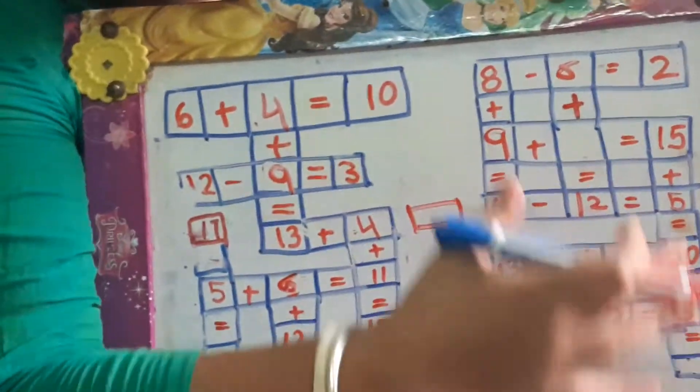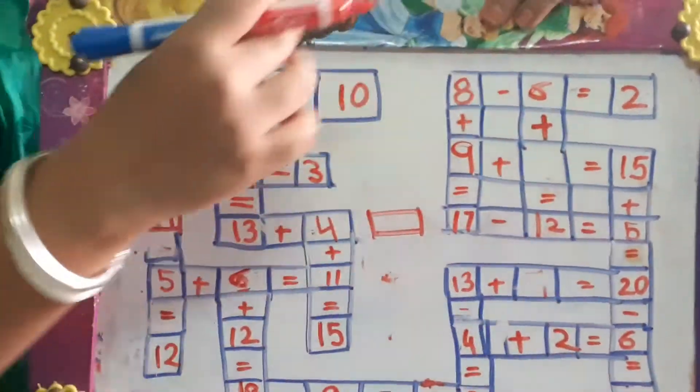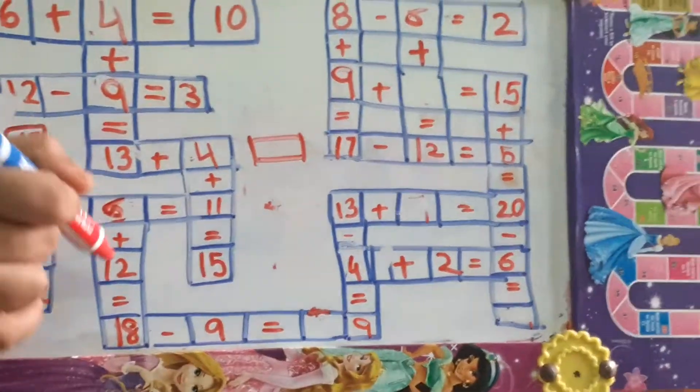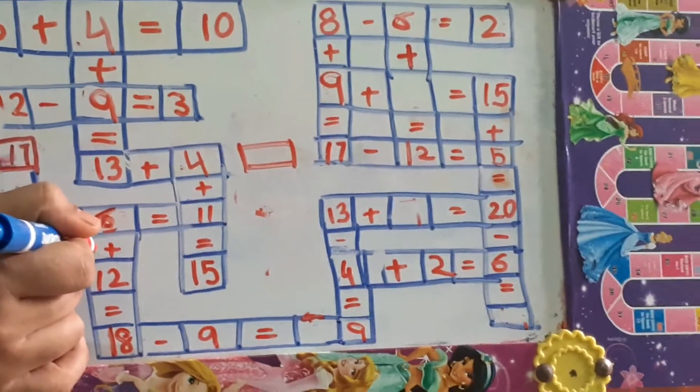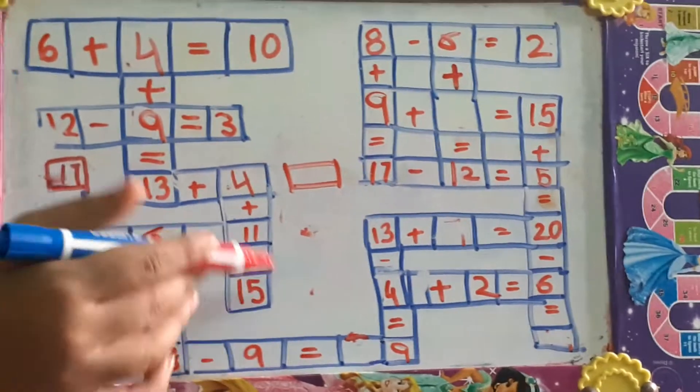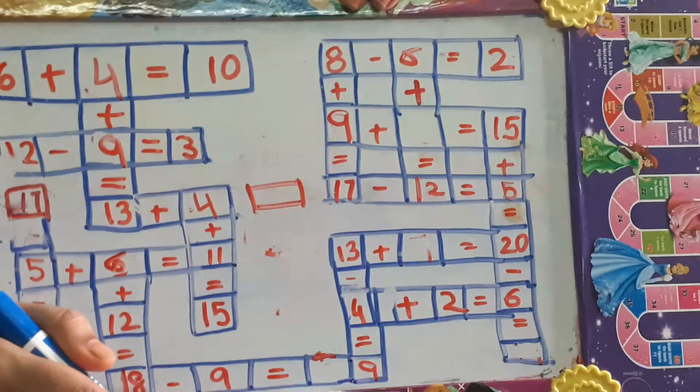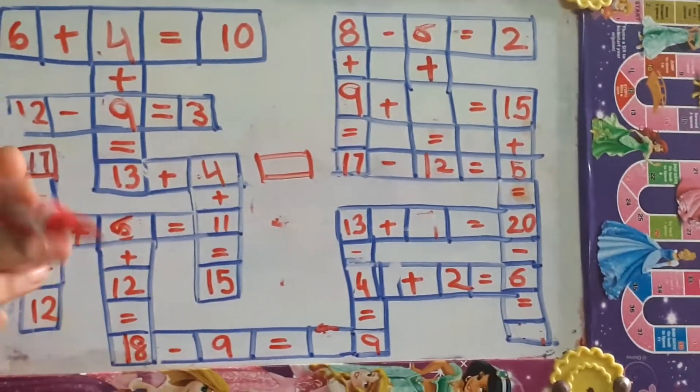So just like this, we have to go on solving 1 by 1, carefully. You have to check for the symbol. And if it is addition, you go forward, and it is subtraction, count backward. Alright children, thank you.